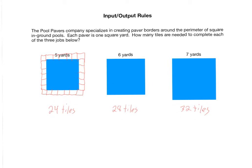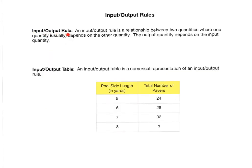This is precisely what we call an input-output rule. An input-output rule is a relationship between two quantities where one quantity usually depends on the other. The output quantity specifically depends on the input quantity — the output depends on the input.